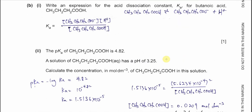Part B1: write an expression for the acid dissociation constant for butanoic acid. You can write out the equation: butanoic acid dissociates to form the salt and H⁺. The Ka expression is the concentration of the salt times the concentration of hydrogen ion, divided by the concentration of the acid.